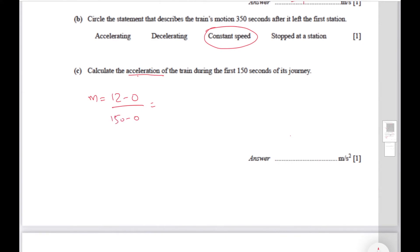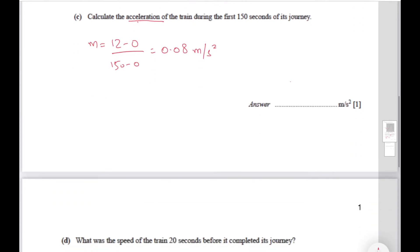12 divided by 150 in decimal form, this is 0.08 meters per second squared because it's the acceleration. So you write it over here.